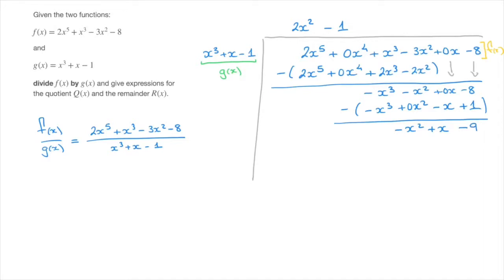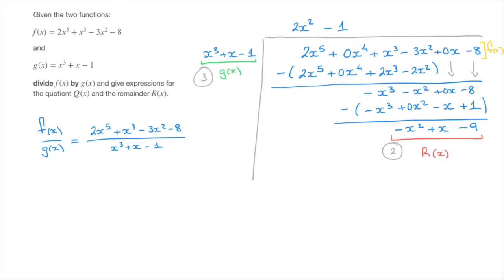At this stage we stop, because this polynomial — −x² + x − 9 — has a degree which is less than the polynomial by which we're dividing. −x² + x − 9 is of degree 2, whereas x³ + x − 1 is of degree 3. As soon as we reach a polynomial whose degree is less than the degree of the divisor, we stop. This polynomial underlined in red is known as the remainder function r(x). The polynomial at the very top of the table is known as the quotient function q(x).